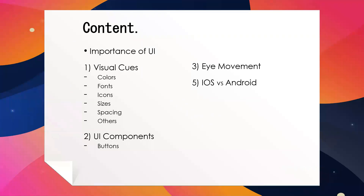For content today, we will first start off with some motivation about UI. Then we will cover visual cues like colors and fonts. We will also talk about UI components, specifically buttons, because they are often regarded as the omnipresent UI element. We will also learn how users engage their eyes during user interaction, and then we will talk about some differences between iOS and Android, since some of you raised concerns about the design philosophy between these two operating systems. This part will be slightly more technical than last week, so I will pause occasionally to answer questions.